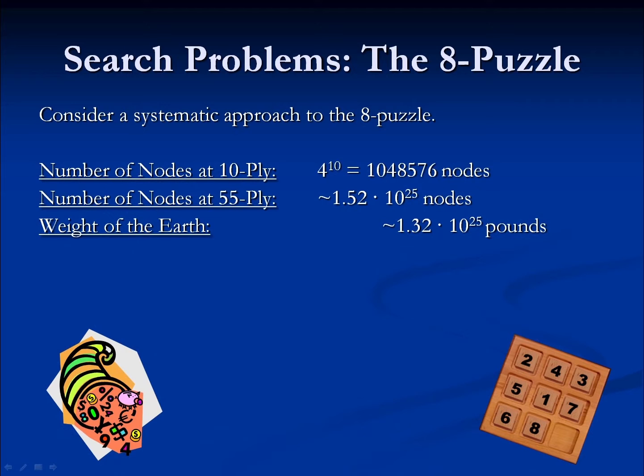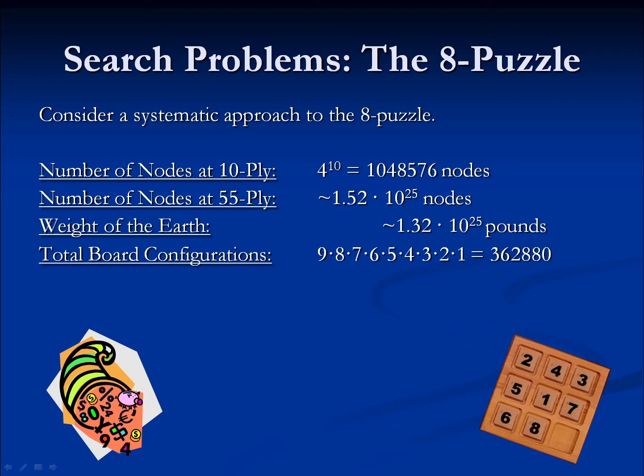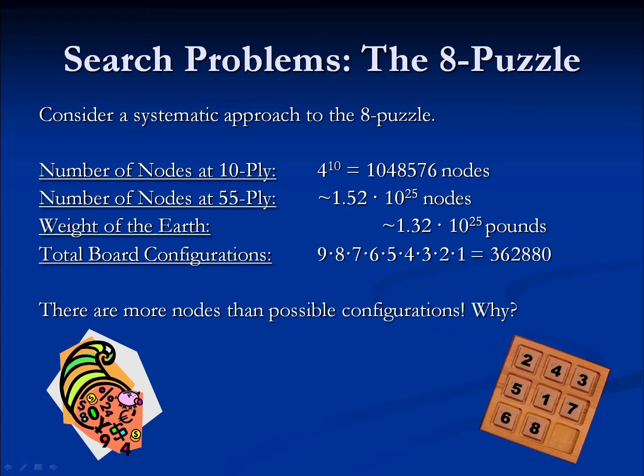What's funny is if we look at the possible number of board configurations on this eight-puzzle problem, there are only around 363,000 possibilities. So why are we running into so many more nodes than possible board configurations?